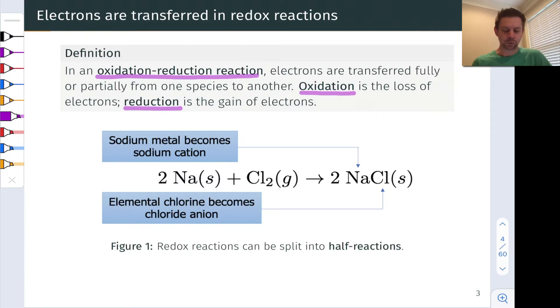And at the bottom of this slide, we see an example of a redox reaction between metallic elemental sodium in a solid and chlorine gas, Cl2 gas. Two NAs react with the Cl2 to produce two NaCl solids, two sodium chlorides.